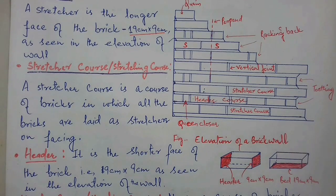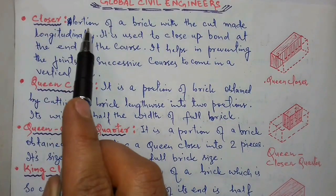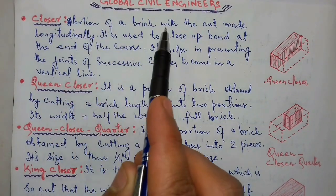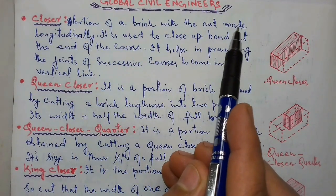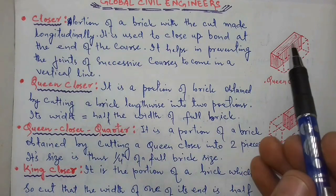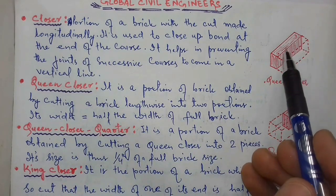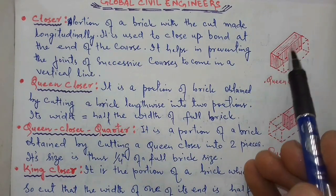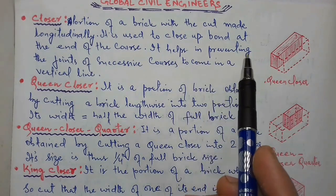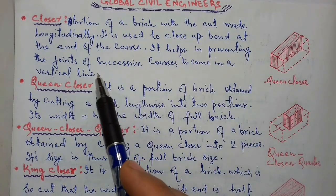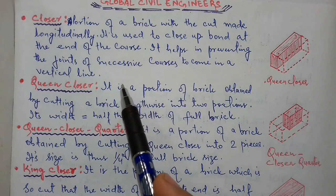Closer: it is the portion of a brick with a cut made longitudinally. As you can see, if we cut a brick longitudinally it is known as a closer. It helps in preventing the joints of successive courses from coming in a vertical line.